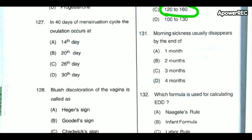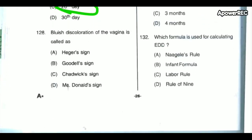These questions are all simple but basic important questions that can be asked in any examination, so please listen carefully. In a 40-day menstruation cycle, ovulation occurs at the 26th day. Blue discoloration of the vagina is called Chadwick sign.